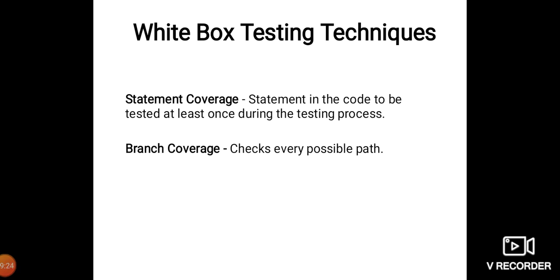Branch coverage checks every possible path — for example, if statements, for loop statements, and if-then-else statements, which are conditional statements of the software application. Apart from these, there are numerous coverage types such as condition coverage, multiple condition coverage, path coverage, function coverage, etc. Each technique has its own merits. Using statement and branch coverage, you generally attain 80 to 90 percent code coverage, which is sufficient.